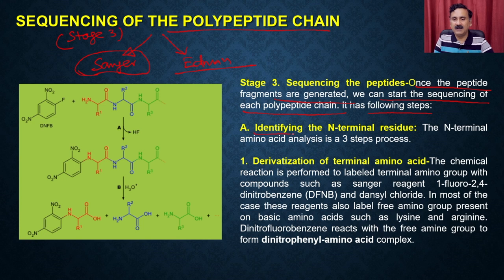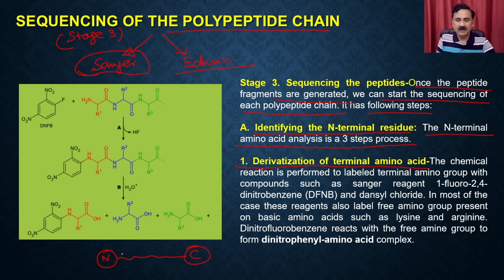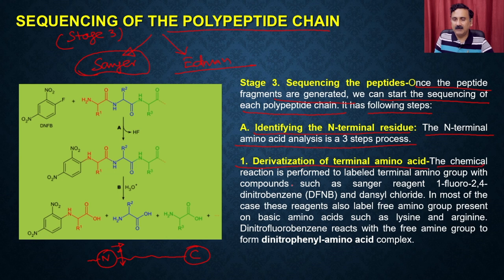In Sanger's method, the first step is to identify the N-terminus residues through N-terminal amino acid analysis, performed in three steps. Step 1: label the terminal amino acids. The chemical reaction uses Sanger's reagents such as 1-fluoro-2,4-dinitrobenzene (DFNB) or dansyl chloride. In most cases, these reagents also label free amino acids present on basic amino acid side chains such as lysine and arginine. Dinitrofluorobenzene reacts with the free amino group to form the dinitrophenyl amino acid complex.